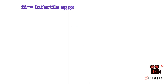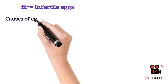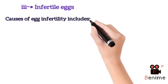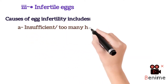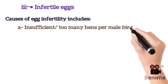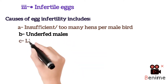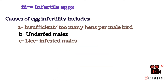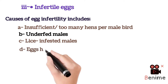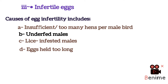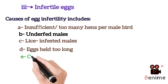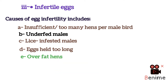The third factor is infertile eggs, which also results in poor hatchability. Various causes of infertility include: insufficient or too many hens per male bird, which may result in infertile eggs; underfed males also results in the production of infertile eggs; lice-infested males — lice being an external parasite — also influence the fertility of eggs. Additionally, eggs held too long, older than seven days as already discussed, can contribute to infertility.